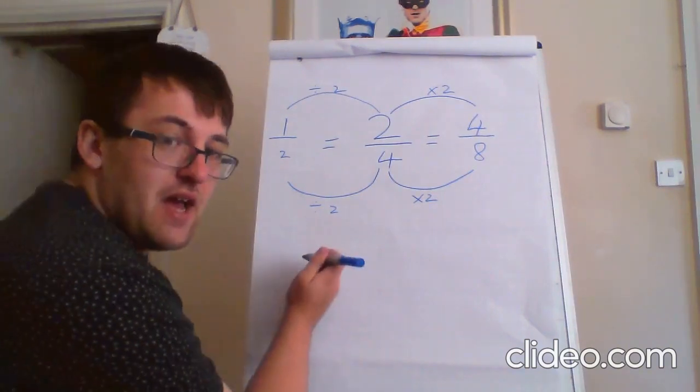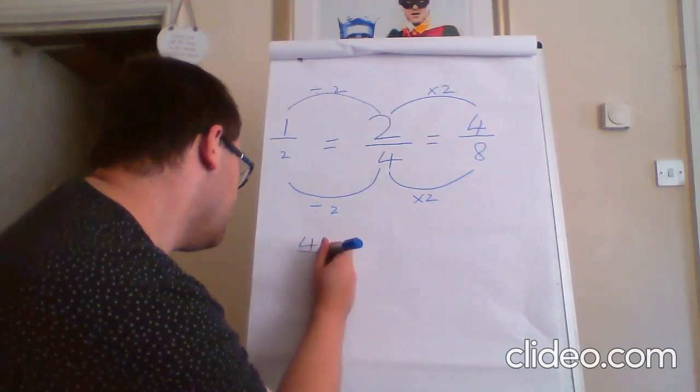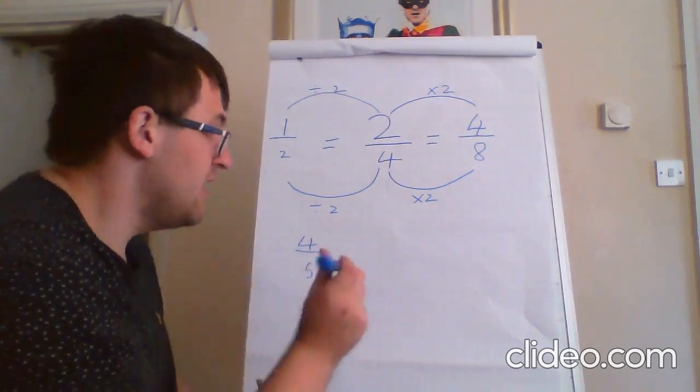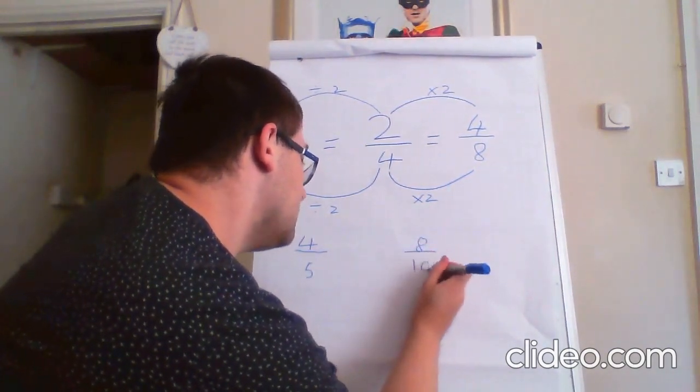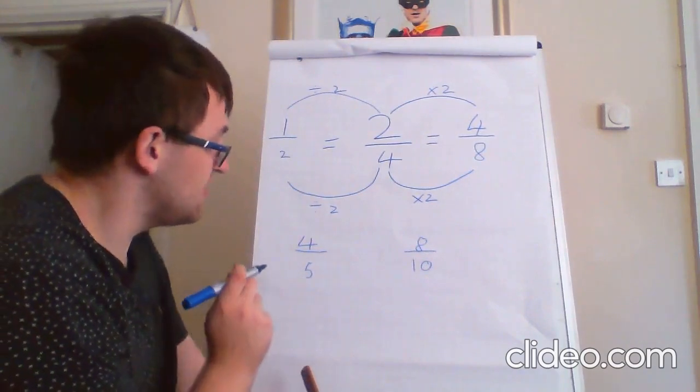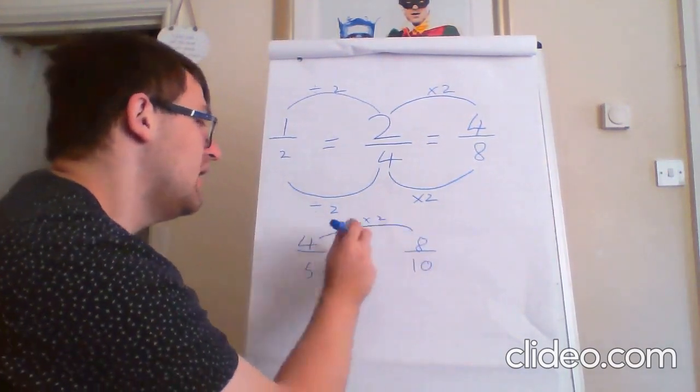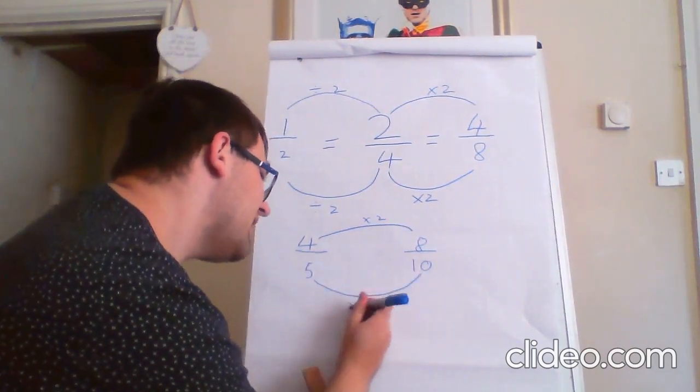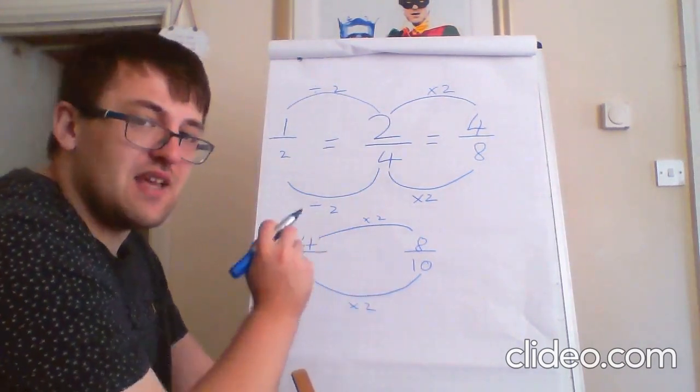Same example if we had four fifths. If I said to you, is eight tenths an equivalent fraction, you could say, well, yes, Mr. Grokow. Because if I times four by two, I get eight. And if I times five by two, I get ten. So, four fifths is the same as eight tenths.